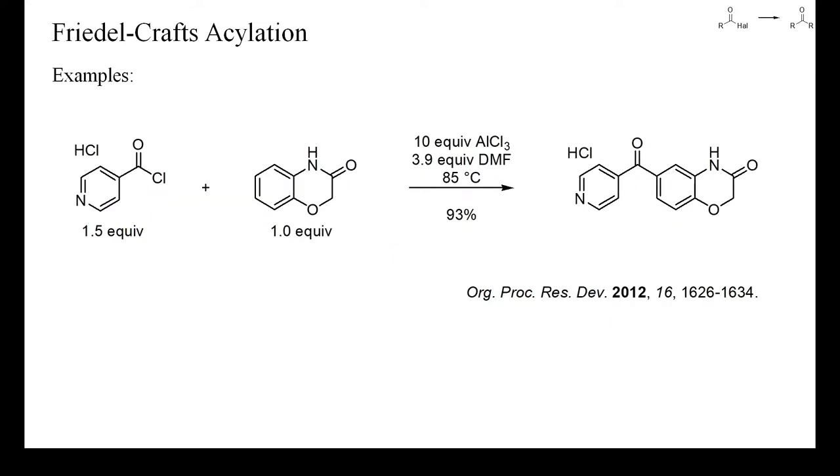One problematic group of starting materials are the halides of pyridine carboxylic acids or of other acids with basic functional groups. During the preparation of these acyl halides, for instance by treating carboxylic acids with thionyl chloride, the acyl halides are obtained as hydrochloride salts, which are insoluble in most arenes or the common solvents used for Friedel-Crafts acylations. One way to use these acyl halides for acylations consists in preparing a melt of these salts with aluminum chloride and a minimal amount of DMF, as shown here.